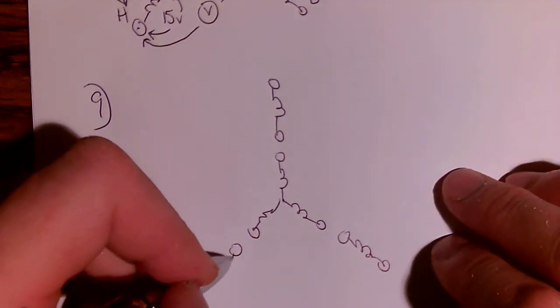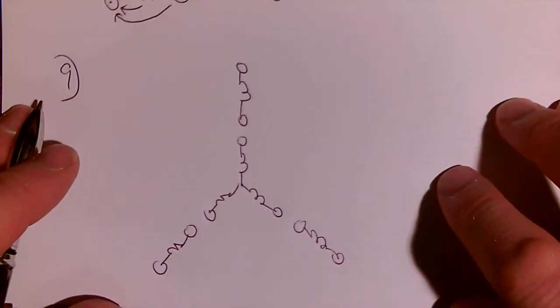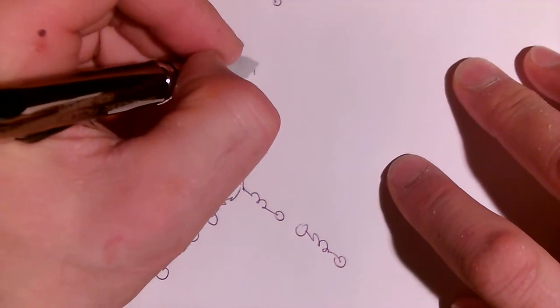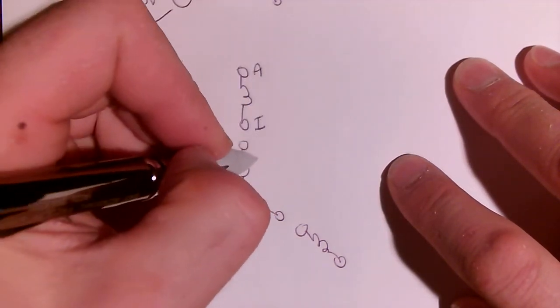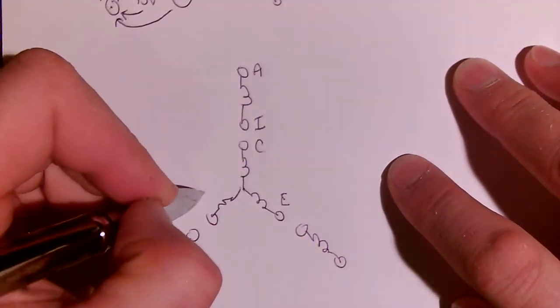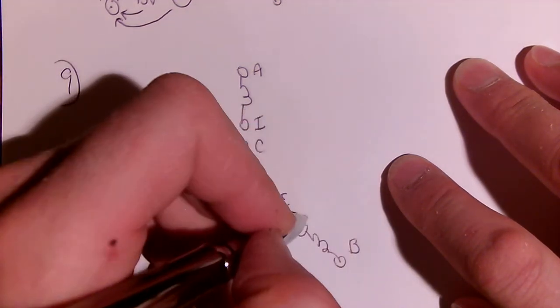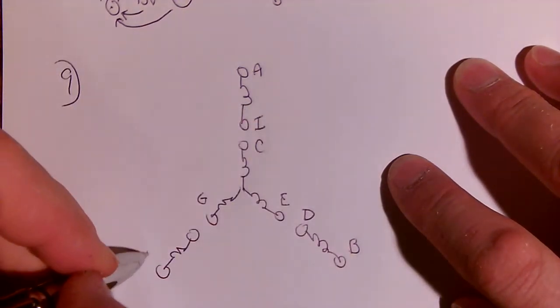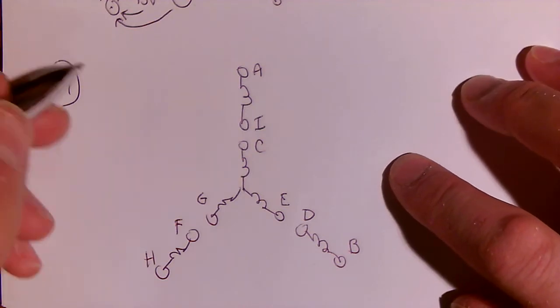How are we doing here? Can you see what's going on? Close enough. Okay. So we have A, I, C, E, G, B, D, H, F. So there you go.